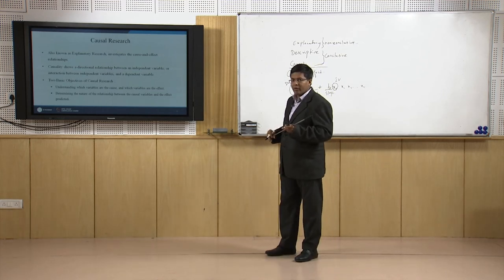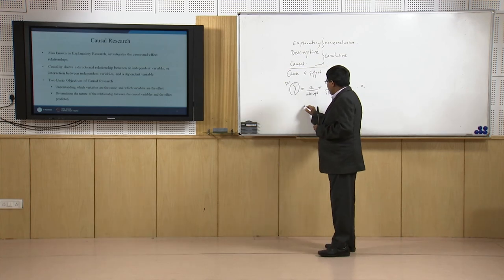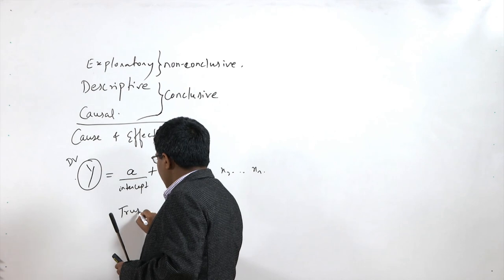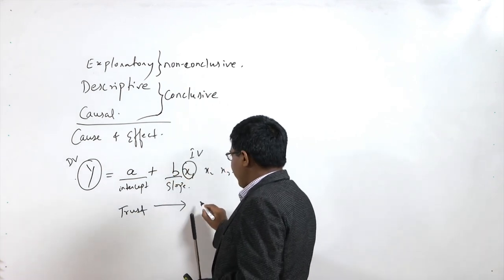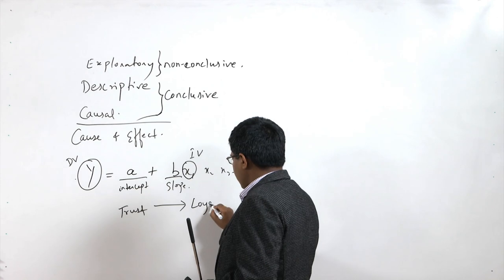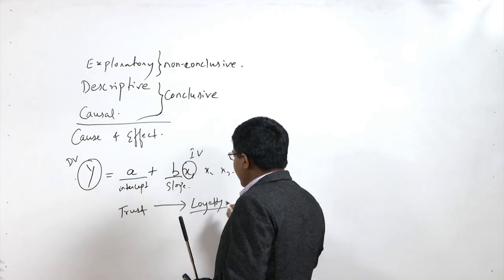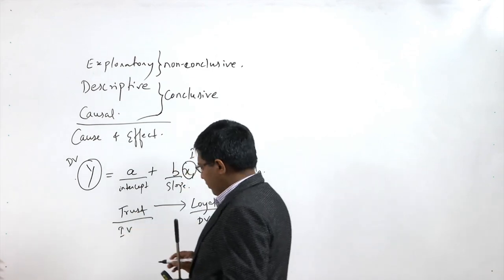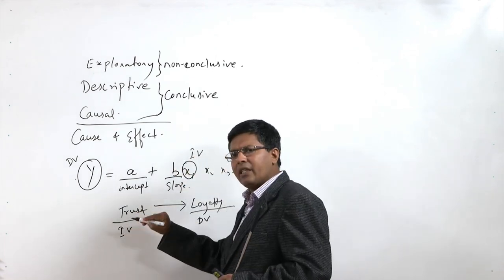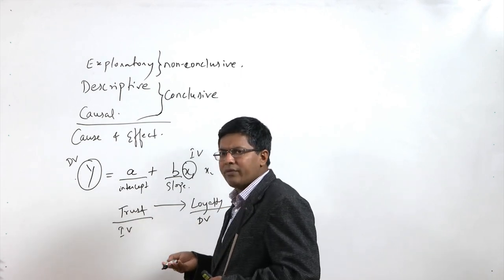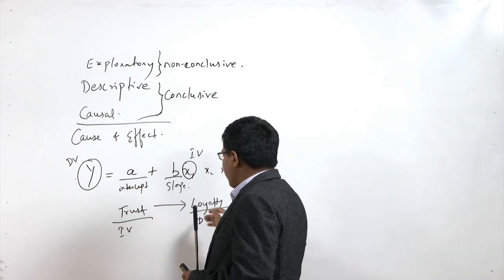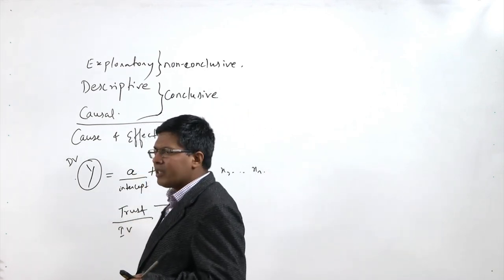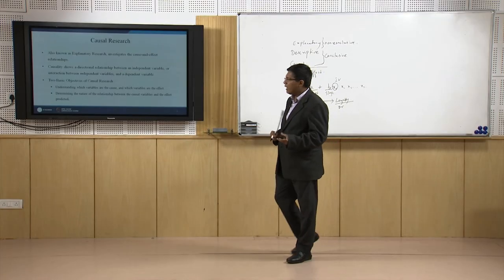What is the relationship? For example, let us say trust affects loyalty. Loyalty is my dependent variable and trust is my independent variable. If there is a change in trust, automatically my loyalty or patronage for the store or company will increase or decrease accordingly. The relationship could be positive or negative — that matters.